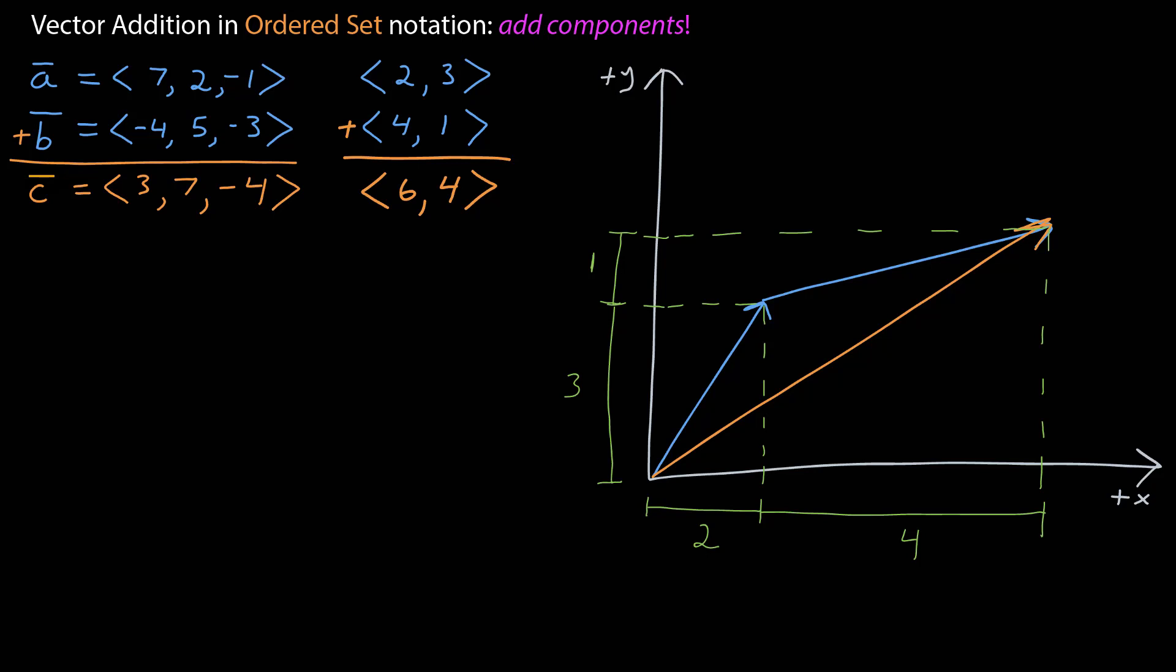So remember how we added vectors in descriptive form. It's exactly this way. You put the tail of the second at the tip of the first, and the resulting vector goes from the tail of the first to the tip of the second.